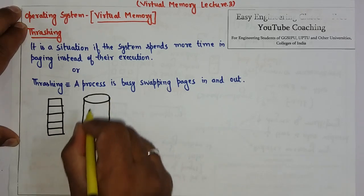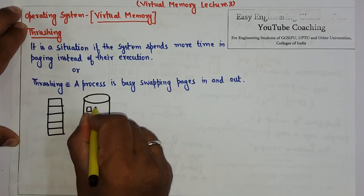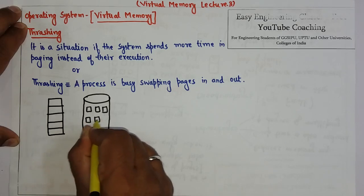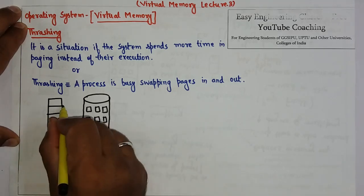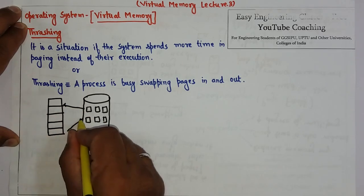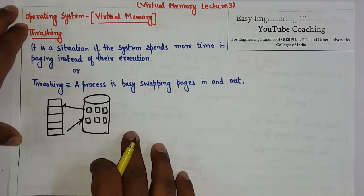Suppose this is secondary storage and the processes are stored in pages. This is the same situation where the process is in order to swap in and swap out. So this is Demand Paging.